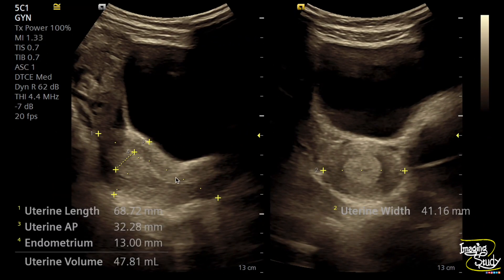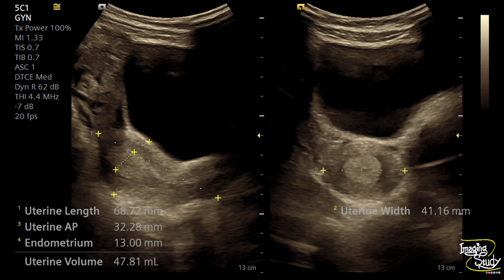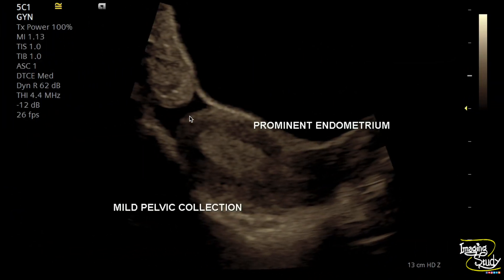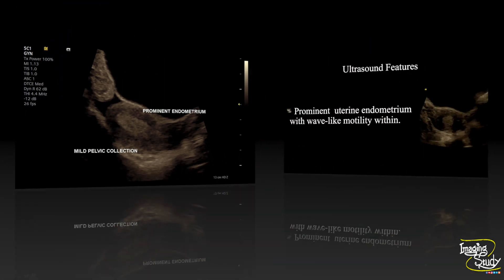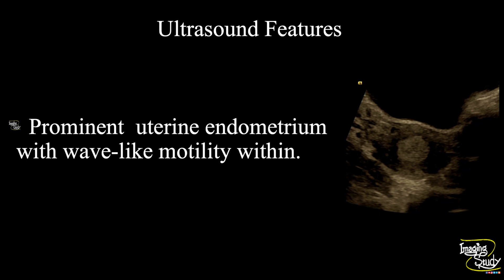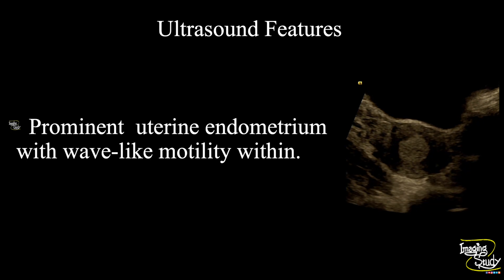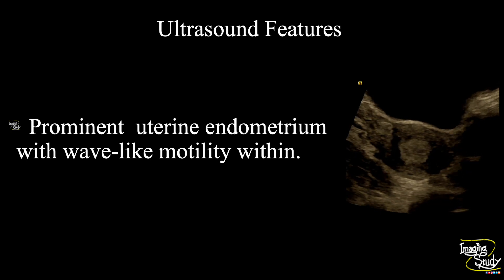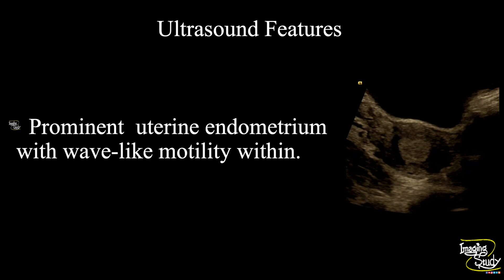Here is the picture. You can see the uterus is quite normal in size. The endometrial thickness is 13 mm, which is prominent for this age. And there was mild pelvic fluid collection. In summary, a prominent uterine endometrium is seen with wave-like motility within, indicating it to be endometrial waves.